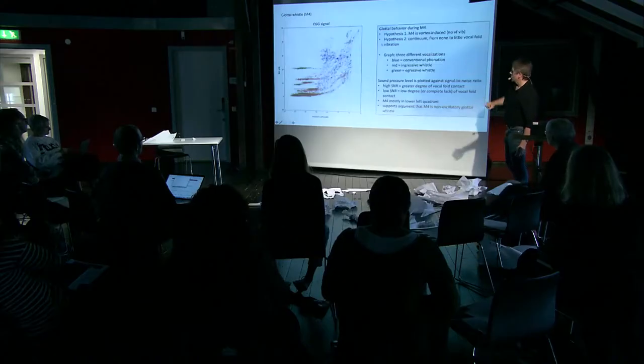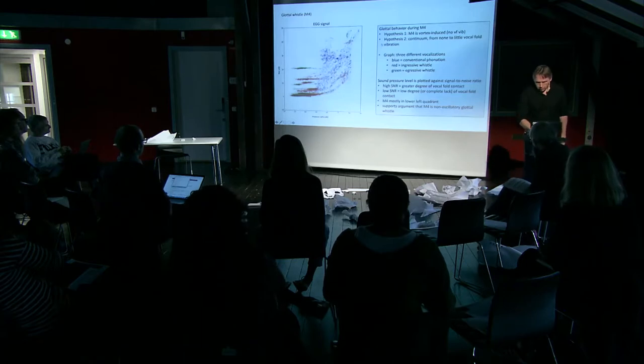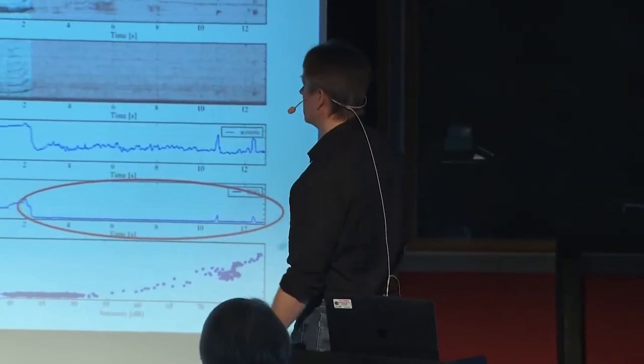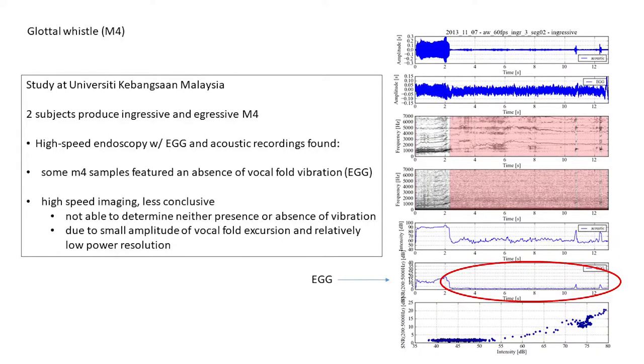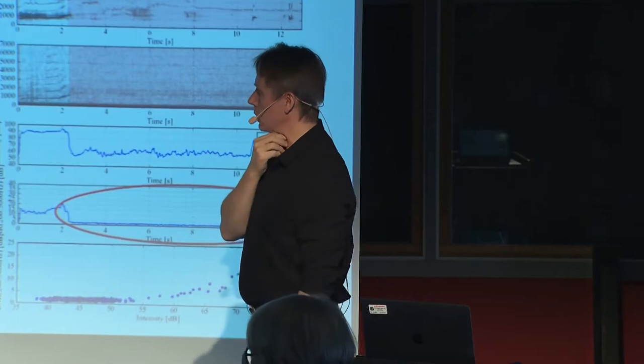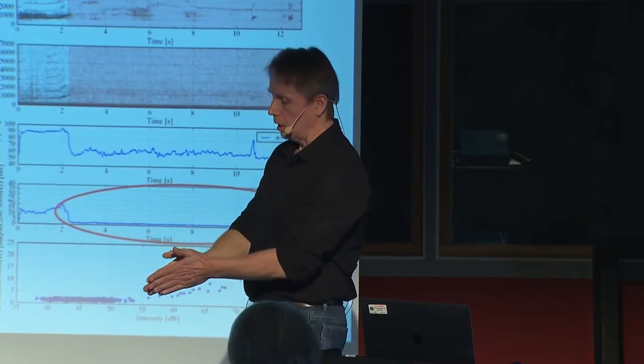So M4 is mostly in that lower left quadrant which supports the argument that it's non-oscillatory. We did a study at the UKM in Malaysia and we had two singers go there and we used high-speed endoscopy also with EGG which is a measure. So endoscopy is either through the mouth or through the nose which is getting visual information about how the vocal folds oscillate. The EGG are two sensors placed on either side of the vocal folds which measures the degree of closure and when.